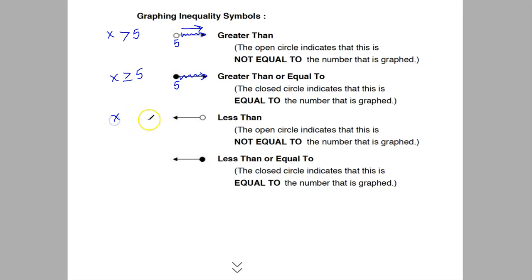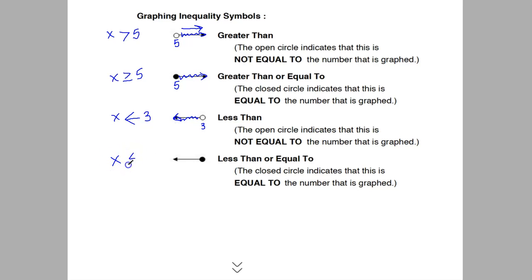If you have x on the left and it's less than, this again acts as the tip of the arrow pointing to the left. So if this is x is less than 3, you'd put a 3 here, open circle, shaded in going to the left. For x is less than or equal to 3, it would be a shaded-in circle going to the left.